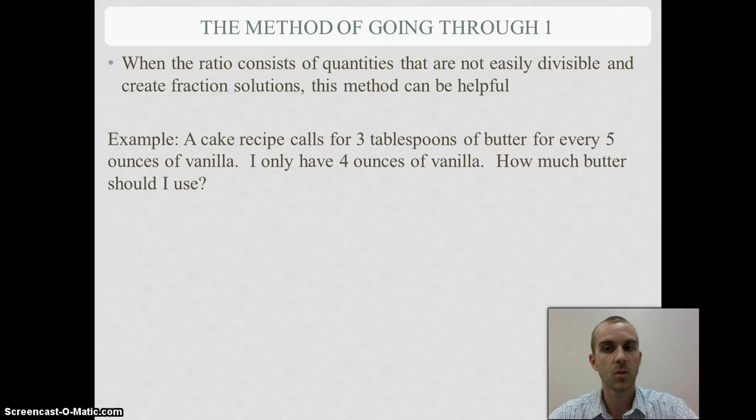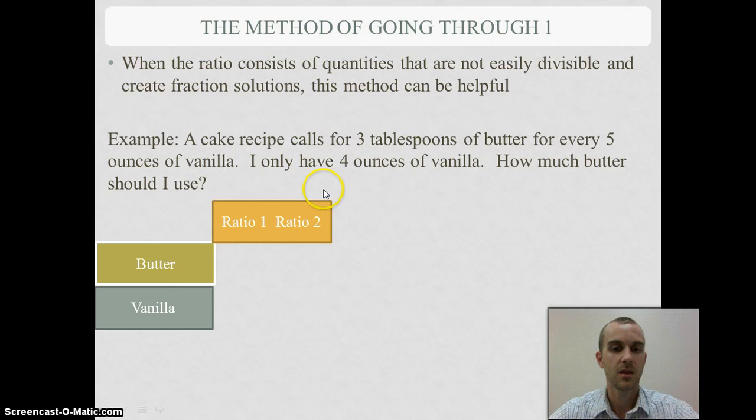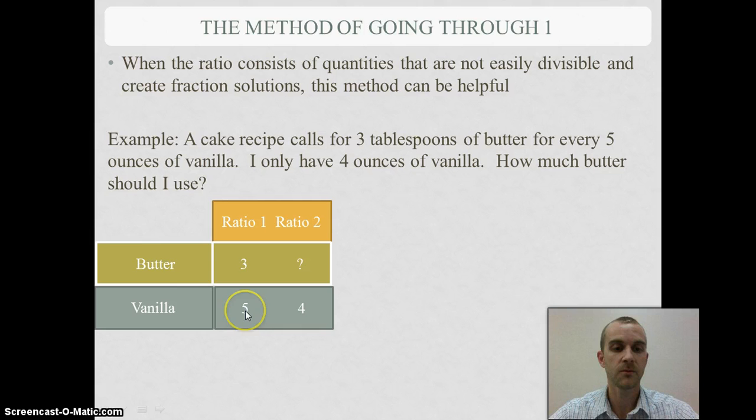Now another method, when we don't have easy numbers we're working with, is this notion of going through 1. A cake recipe calls for 3 tablespoons of butter for every 5 ounces of vanilla. I only have 4 ounces of vanilla, so I want to know how much butter am I going to have to use instead. Again, we can start with the chart. I know that at my first one I've got 3 for butter and 5 for vanilla, but I've got to go down to 4.